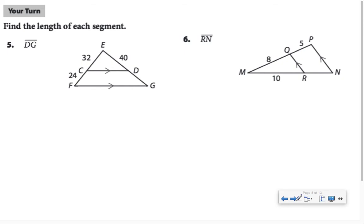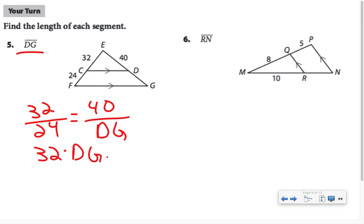A couple more examples. In example 5, we know that 32 is to 24 as 40 is to DG, which is what we were asked for. Cross-multiplying, we have 32 times DG equal to 40 times 24, which is 960. Divide both sides by 32, and the length of DG is 30.